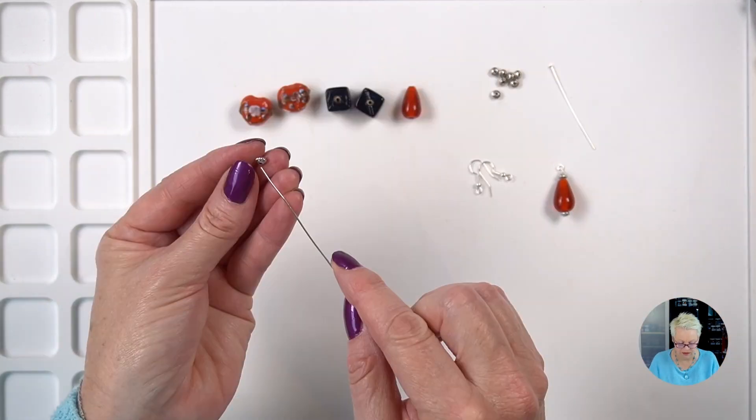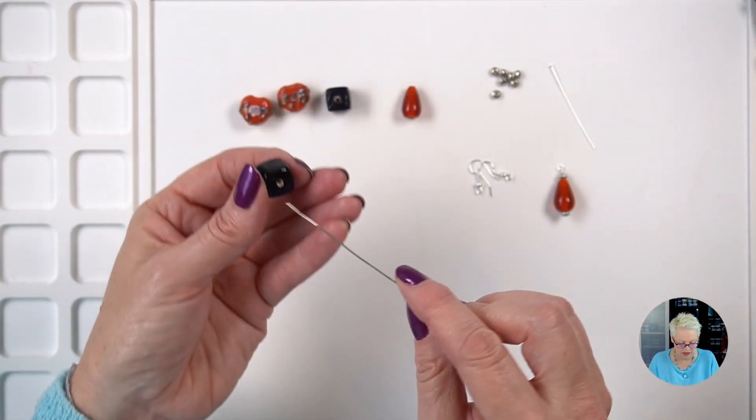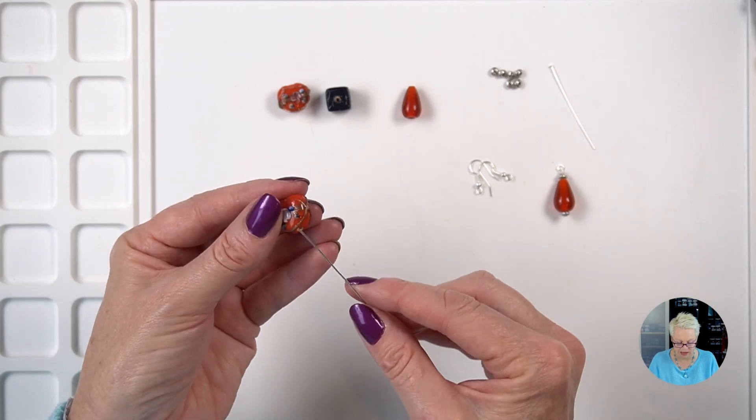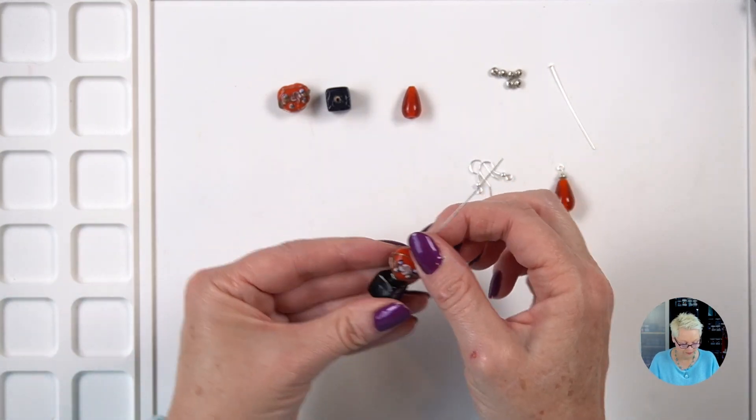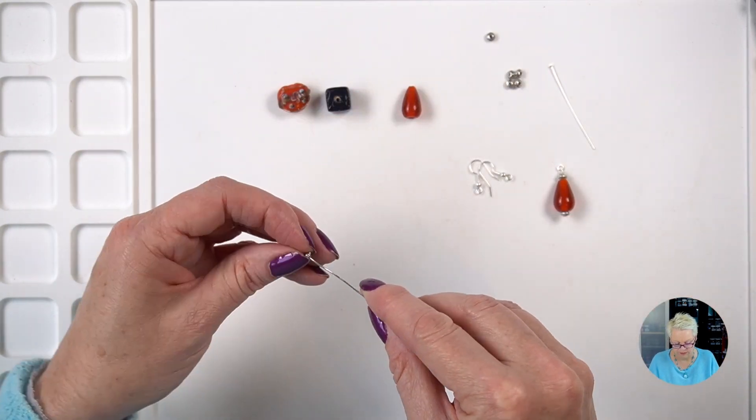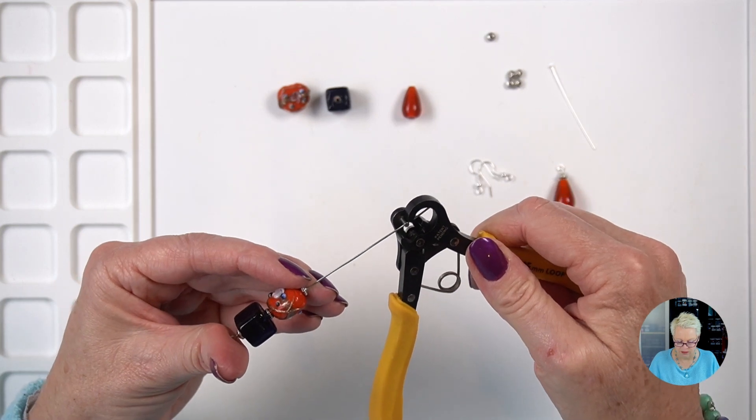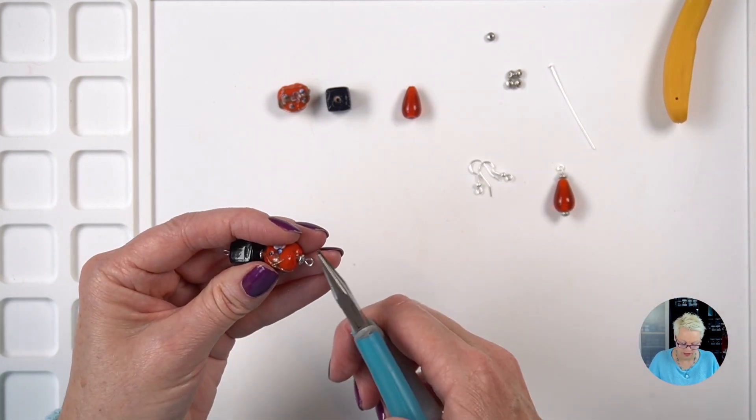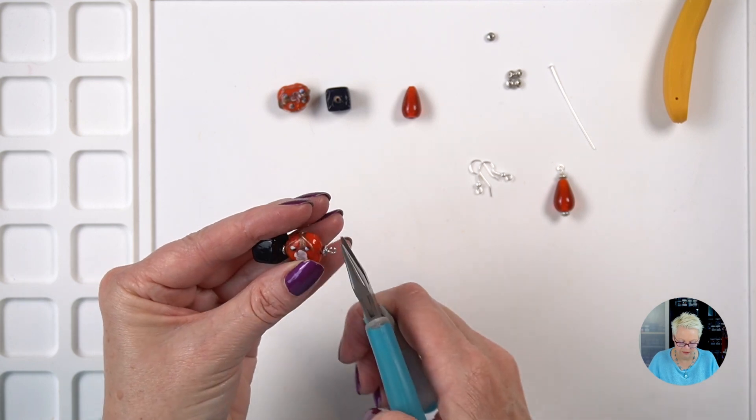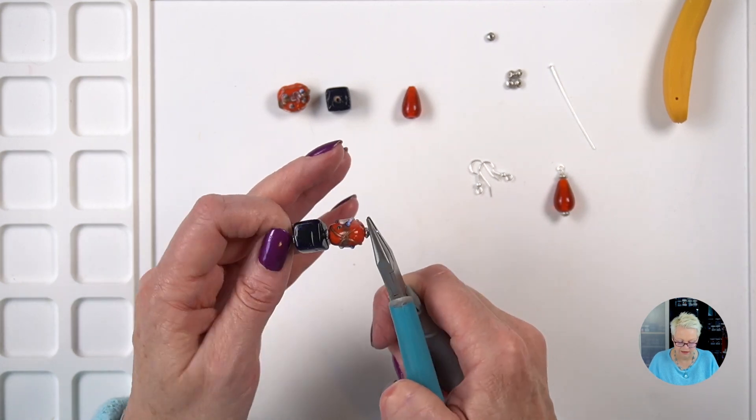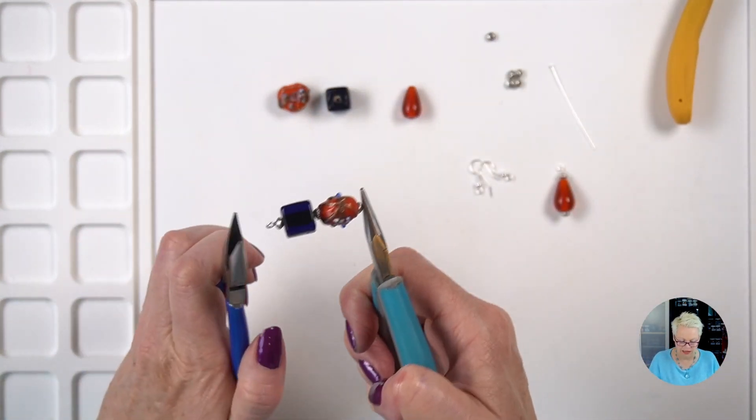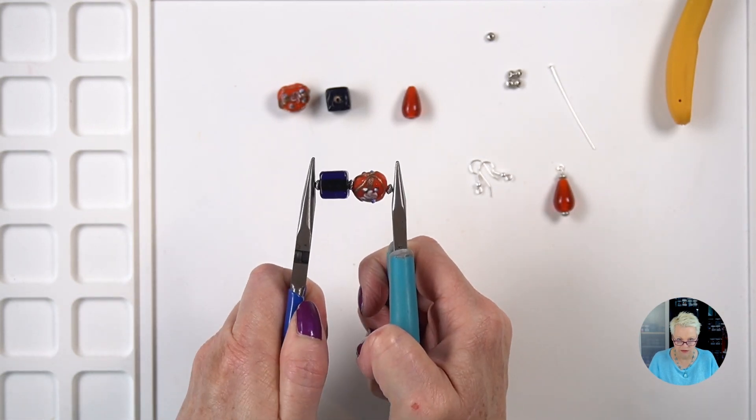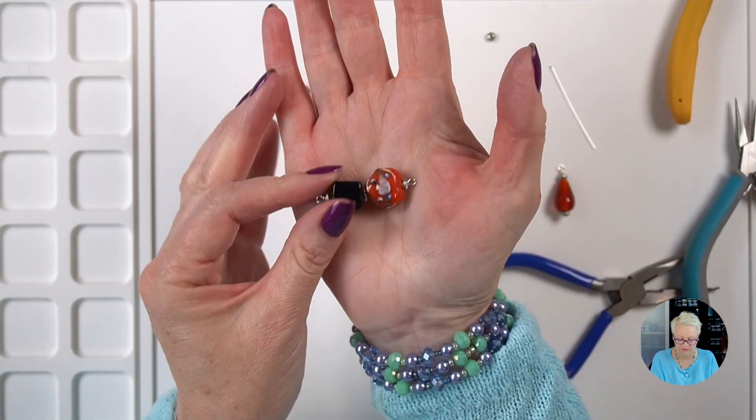Now what I'm going to do is thread on a rondelle and my square bead, another rondelle and my heart, making sure I get it up the right way. I want the top of the heart to be at the top. And one last rondelle. Okay now I'm going to just make a loop in the top. And just closing it up. Make sure it's nicely closed. All right now what I want to do is I want to take my other pair of pliers and just make sure that those loops are both going the same way. So just giving them a bit of a wiggle so that they're both facing the same way. So that's what I have now.